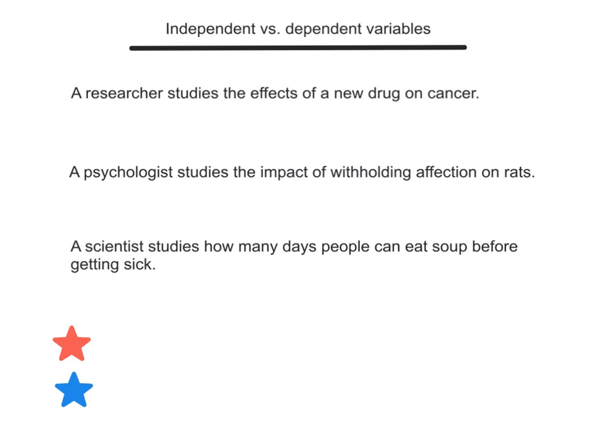A researcher studies the effects of a new drug on cancer. The independent variable would be the new drug — what kind of new drug are they going to give them, or if they're going to give them a placebo, so no drug at all. The dependent variable would be the effects on cancer. Did the person get better? Did they live so many days longer than the people who did not get this new drug?